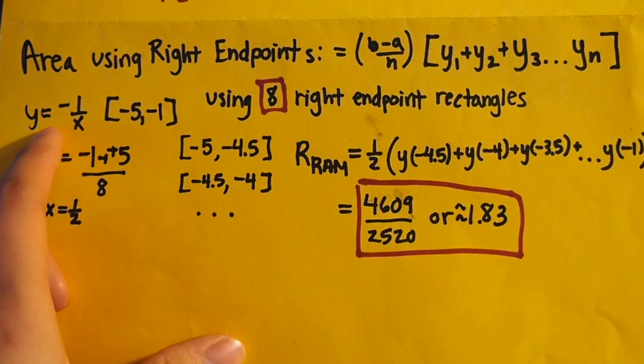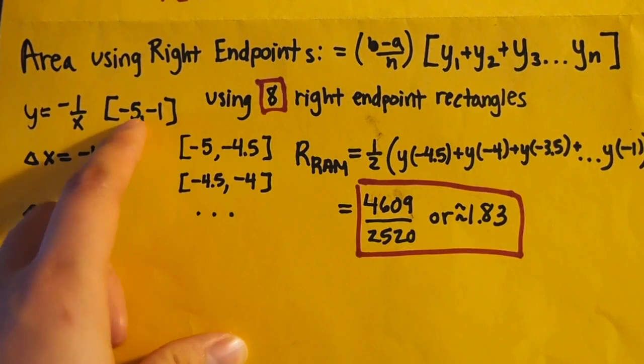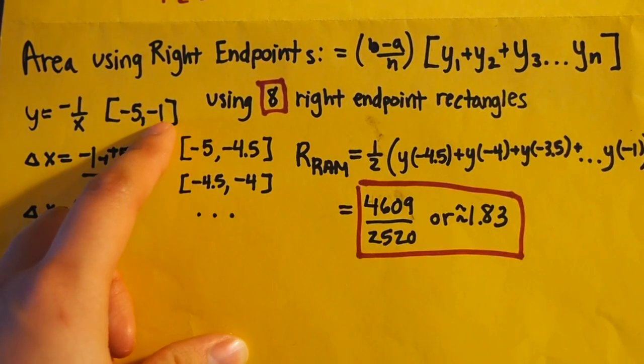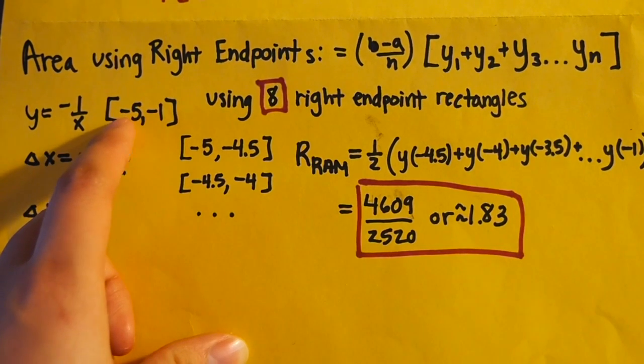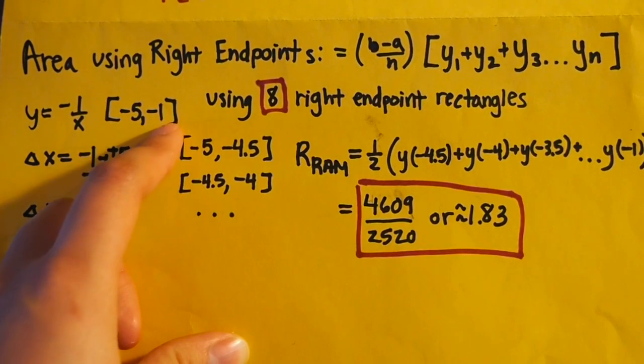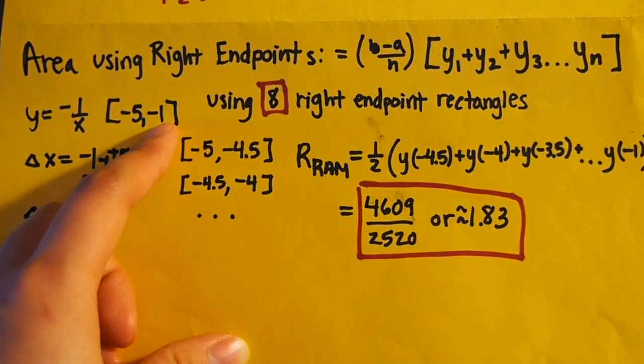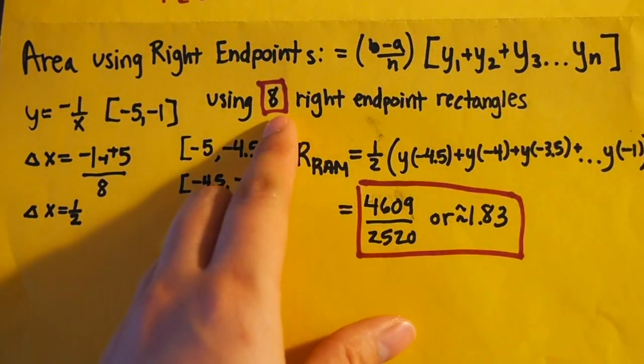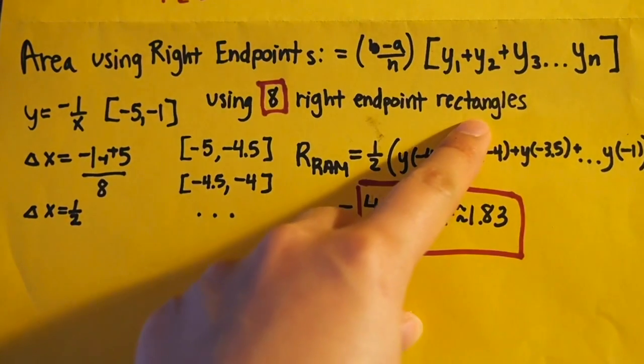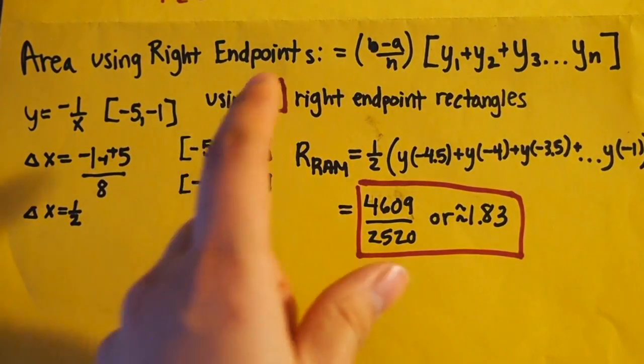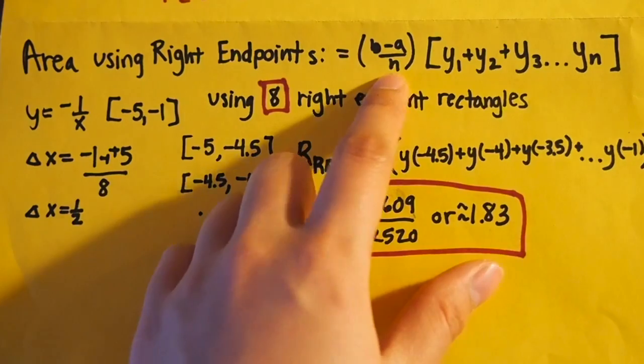So in this equation, y equals negative 1 over x from negative 5 to negative 1, with the lower bound being negative 5, which is a, and b equals negative 1. And we'll be using 8 right endpoint rectangles, or 8 subunits, which means that n equals 8.